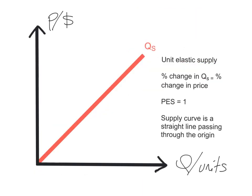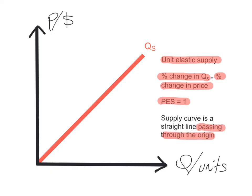When the price elasticity of supply equals 1, this happens when the percentage change in quantity supplied always equals the percentage change in price — a proportionate change. In this situation, we say we have unit elastic supply, and the supply curve will always pass through the origin as a straight line. The percentage change in quantity supplied will always equal the percentage change in price, and price elasticity of supply will always equal 1.